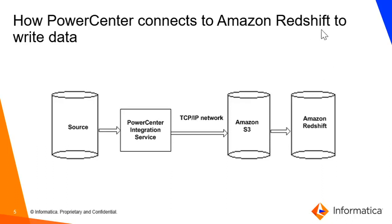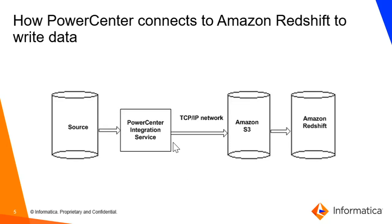Now let's see how PowerCenter connects to Amazon Redshift to write the data. When you run an Amazon Redshift session, the PowerCenter integration service writes the data to Amazon Redshift based on the workflow and Amazon Redshift connection configuration. The PowerCenter integration service stores the data in the staging directory on your PowerCenter machine.